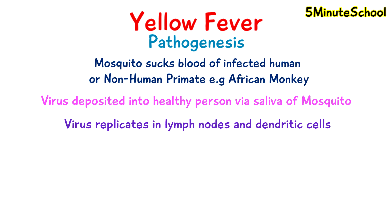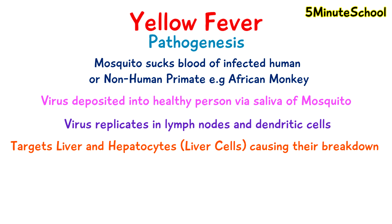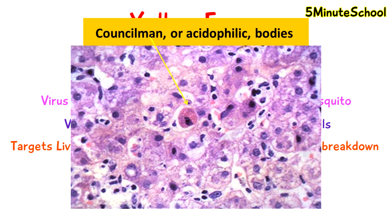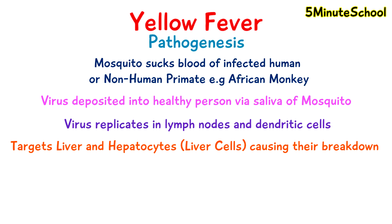From there we start to see the liver getting affected. The virus targets hepatocytes of the liver and eventually starts causing the breakdown of these hepatocytes. We can see this because masses start forming in the cytoplasm of these hepatocytes, called councilman bodies, which indicate a dying hepatocyte, or a dying liver cell.